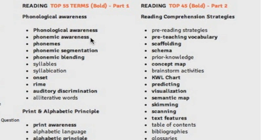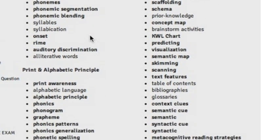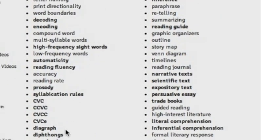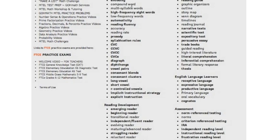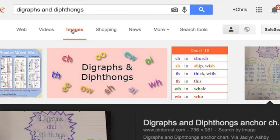I want you to go through, and this first level of the assignment is to go through each one of these and come up with a very basic one-sentence definition — for example, of phonological awareness or phonemic awareness. You can do this a bunch of different ways. Let's say I focused in on these ones right here: diagraph, diphthongs, and vowel pairs. One way to do this is you could go to Google, type it in, and press on images.